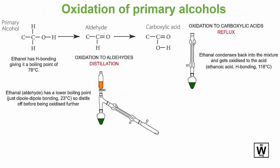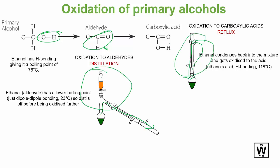To get the aldehyde, note that the alcohol has hydrogen bonding but the aldehyde only has dipole interactions, so its boiling point is much lower. This means it will evaporate off and you can collect it by distillation. However, if you want to further oxidize it to the carboxylic acid, you can't let it escape — you need to use a reflux system so it cools down and returns to be further oxidized.